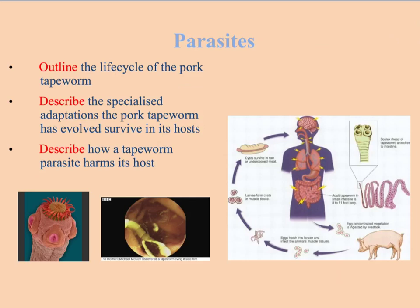Parasites are highly specialised organisms that have evolved to become really well adapted to their environment inside or outside the host. The example we're going to study here is the pork tapeworm. The pork tapeworm has two hosts — humans and pigs. The adult tapeworm lives in the human gut.